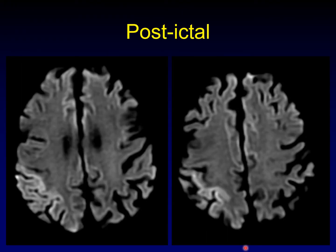Patients recovering from a seizure may have abnormal gyroform restricted diffusion, as in this patient. This occurs in a single region near the site of origin of the seizure itself. The unifocality is often a good clue, as well as simply the clinical history of a recent seizure.